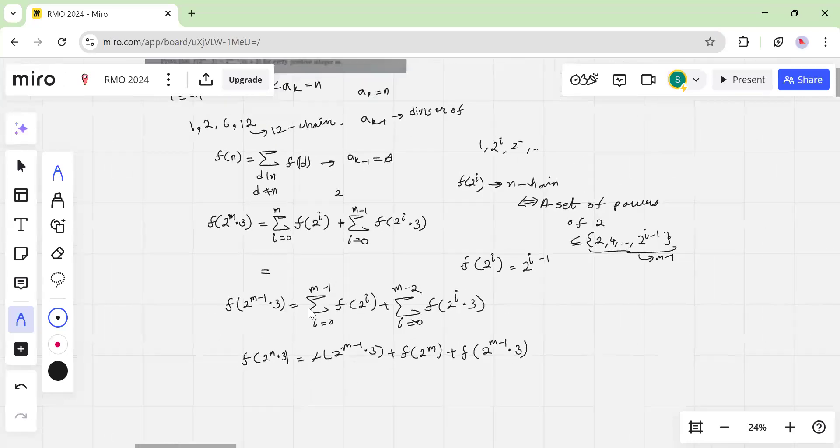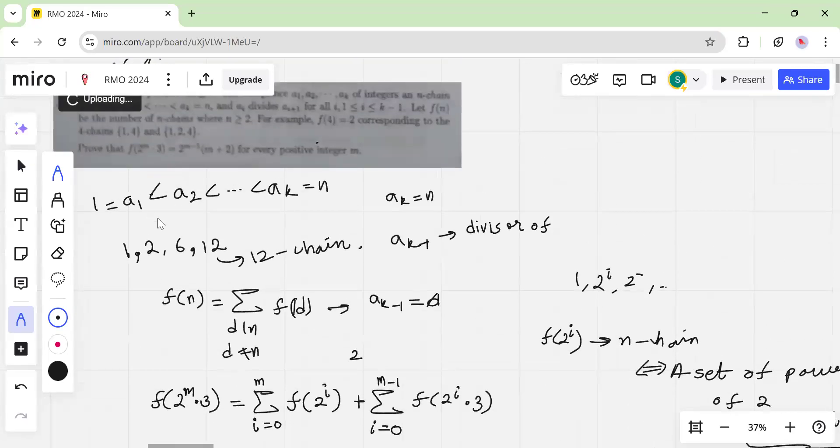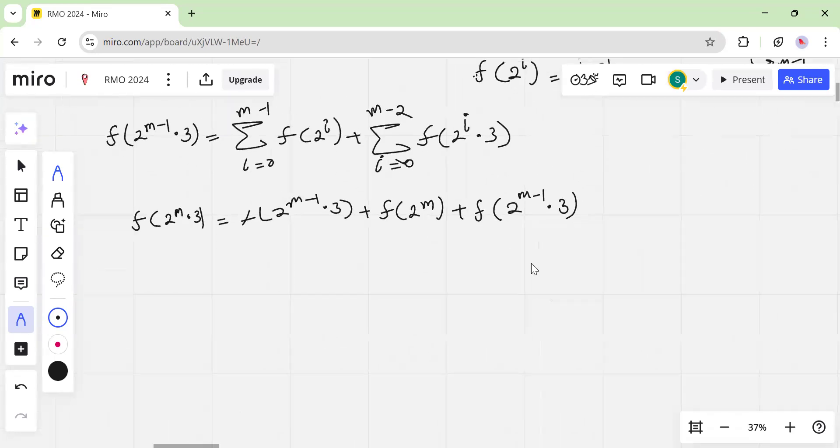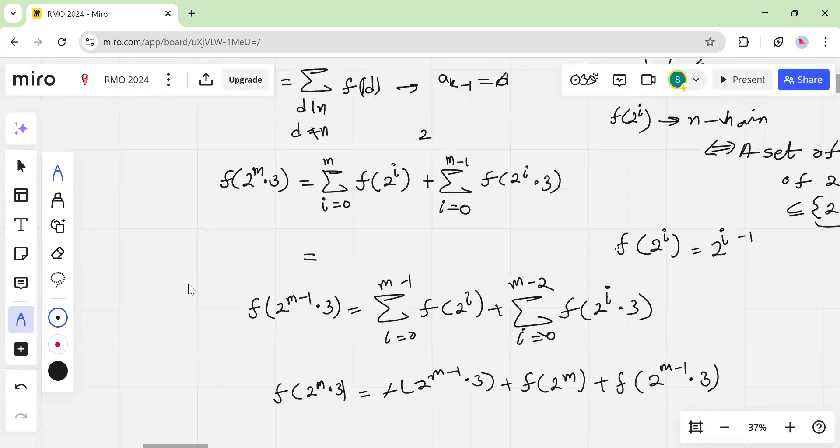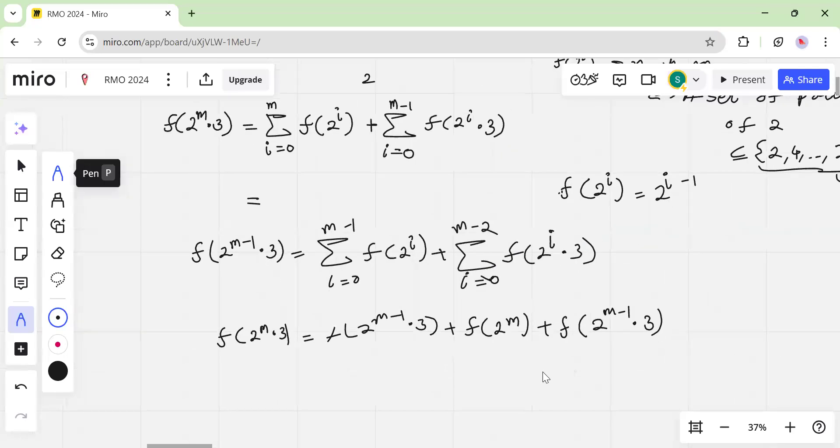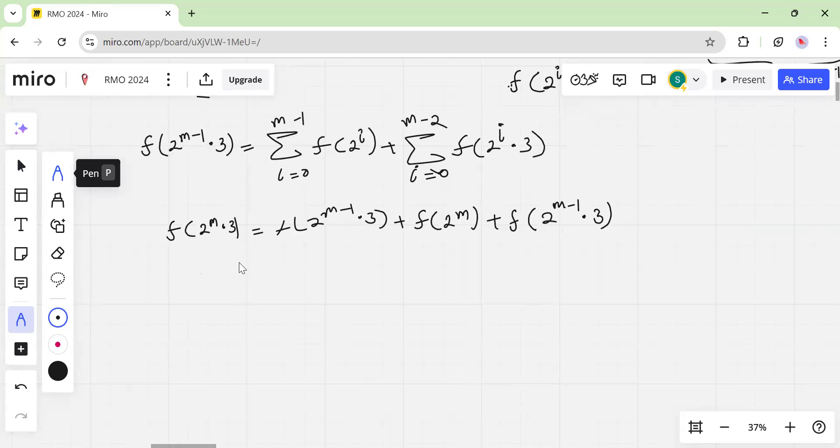And now we will induct because you have a recursion. So that is what you do when you have a recursion. Induct. See, induct on n. Base cases are easy to check, I assume. I mean, base cases are like 6 and yeah, that's it. You have to check 6. Or also, if you want to save time, then you can just check 3, because why not? So now, yeah, now you just evaluate the sum and it will sort of work out.